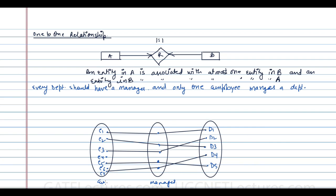The entities are employee and department. The cardinality of employee is one — cardinality being the maximum number of relationships an entity can participate in. The participation of employee is zero — participation being the minimum number. Employees e1, e2, e3, e5, and e7 each participate in exactly one relationship, while e4 and e6 participate in none, giving a minimum participation of zero.